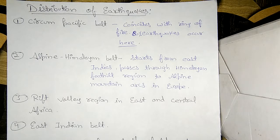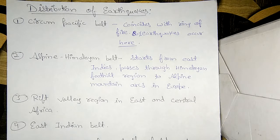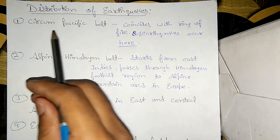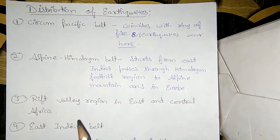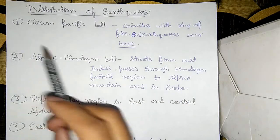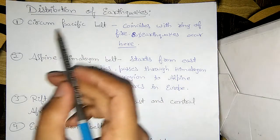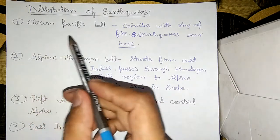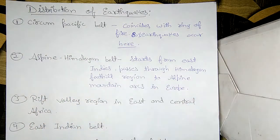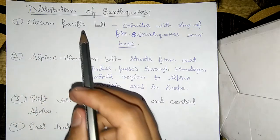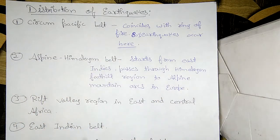Earthquakes occur all around the world, but we will discuss where they occur majorly. So the topic is distribution of earthquakes. The first belt, as you can see here, is the Circum Pacific Belt — the region where earthquakes occur frequently.